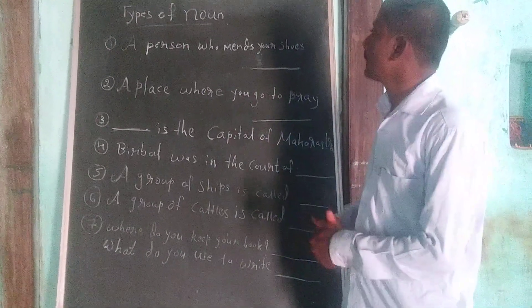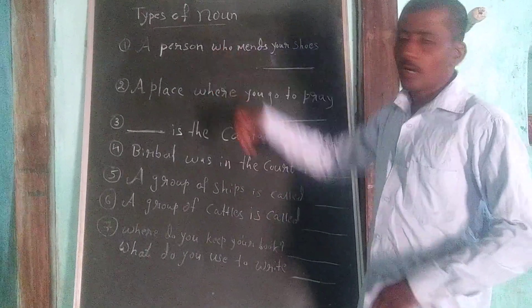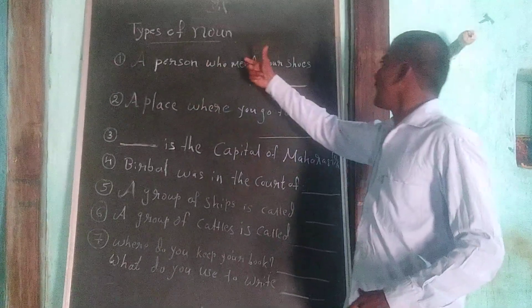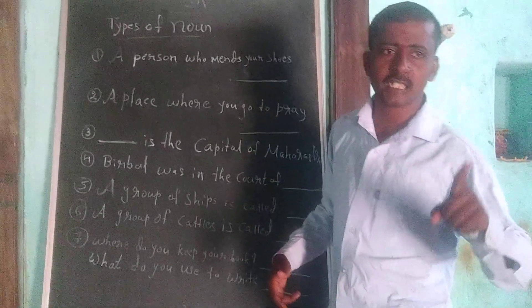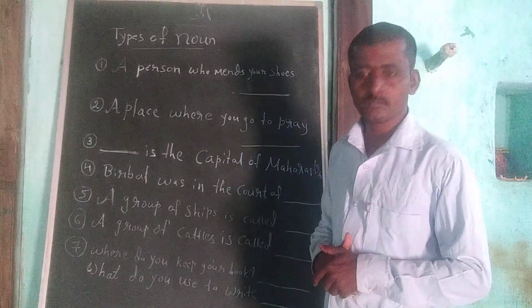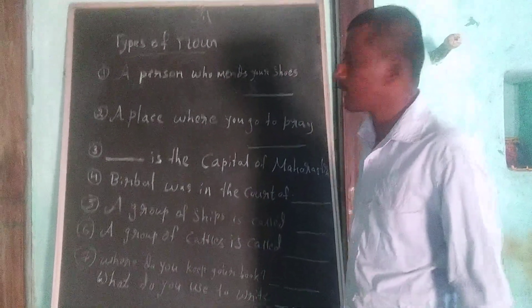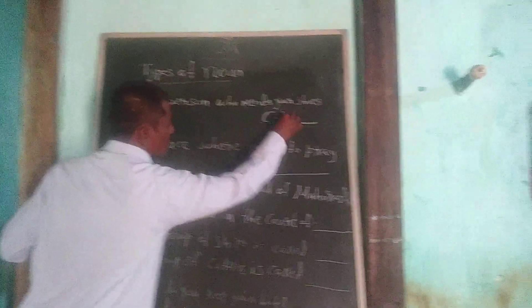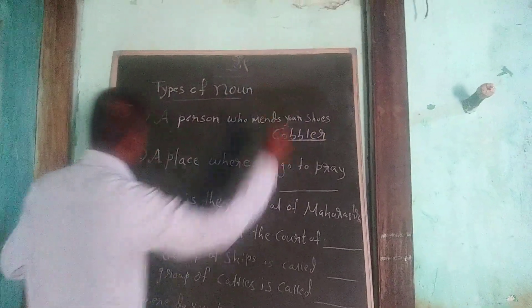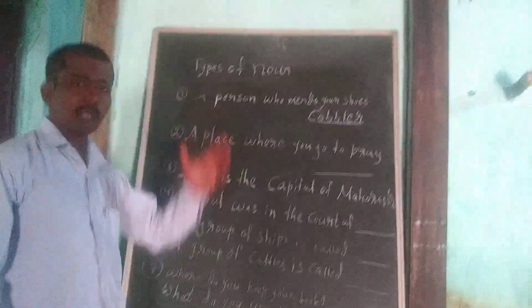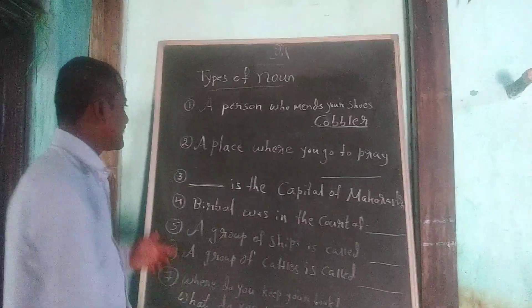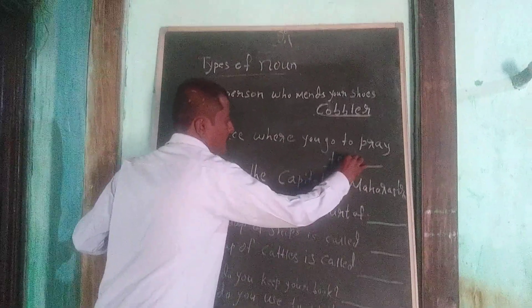Now I am going to ask you a few questions, children. A person who makes your shoes — can anyone name me a person who makes your shoes? Yes, very good — it's a cobbler. The person who makes the shoes is a cobbler. Very good. Then, a place where you go to pray — temple, very good, church, mosque. We'll take temple here, children.